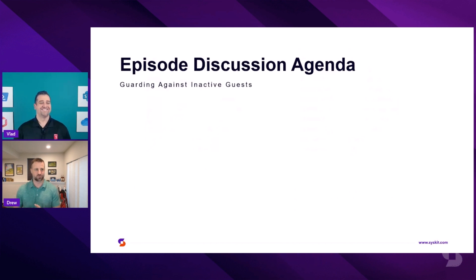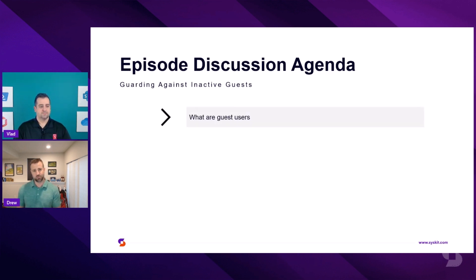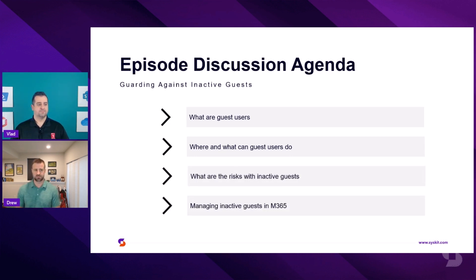Let's talk about this episode first. We're going to be going through all about inactive guests. In prior episodes, we've talked about orphaned workspaces and orphaned users. The last episode, we talked about users inside of Teams and being an owner inside of Teams. One of the things you can do is actually manage and work with guests. This episode, we're going to talk about managing inactive guests and guarding against them — how do we protect that data?